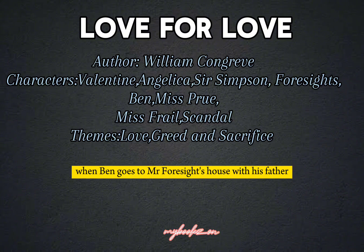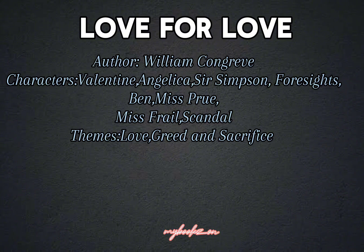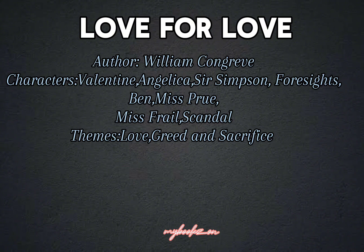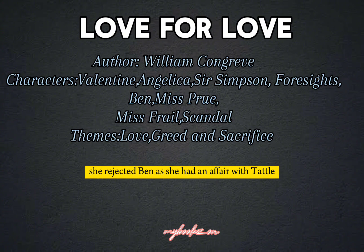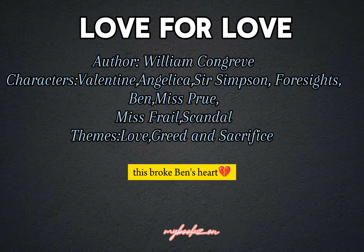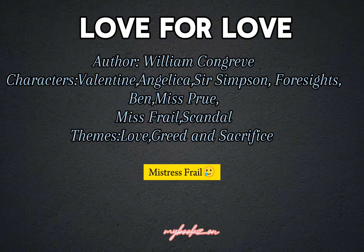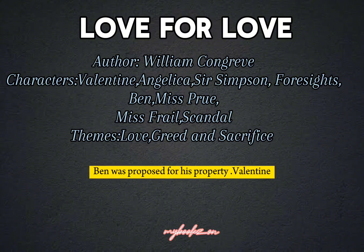The story continues when Ben goes to Mr. Forsythe's house with his father. He wanted to marry Miss Prue, who was Forsythe's daughter. She rejected Ben as she had an affair with Tattle, which broke Ben's heart. Another woman, Mistress Frail, took advantage of this, and Ben was proposed to for his property.